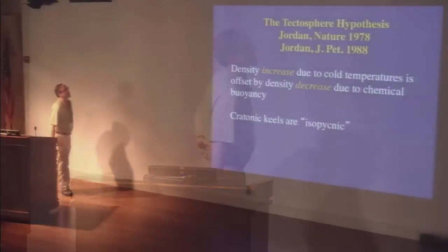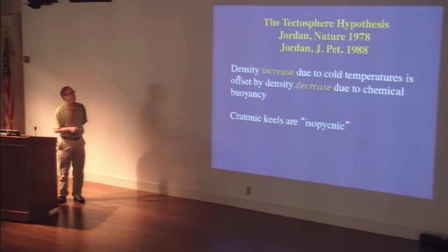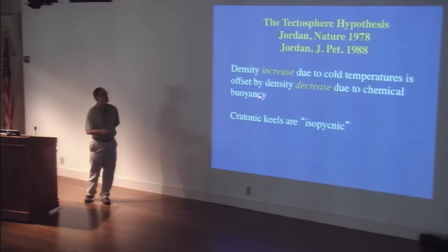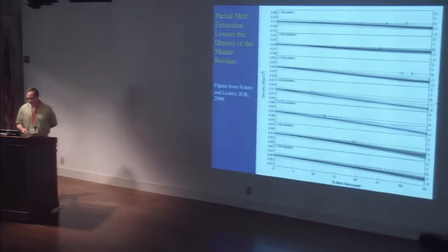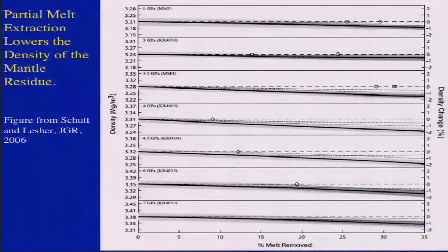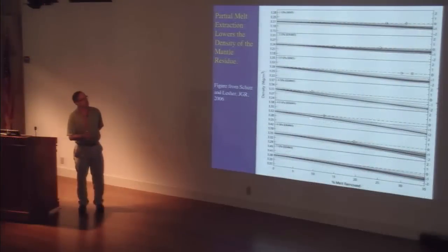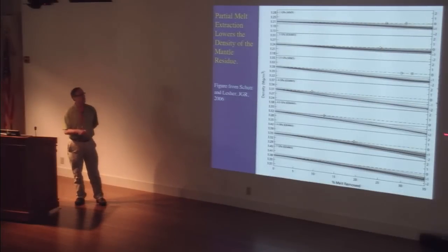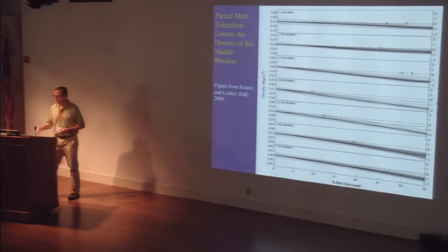This led Tom Jordan in the 1970s to the isopicnic model: if the cratonic mantle is cold, causing a density increase, you need to compensate with chemical buoyancy from melt depletion. From Derek and Chip's paper on partial melt extraction effects on density: at shallow depths (~1 GPa), removing melt lowers density by less than 1%, but at ~100–150 km depth you can get density differences of about 2% by removing melt. This 2% difference is quite important in creating the isopicnic character of the lithosphere.